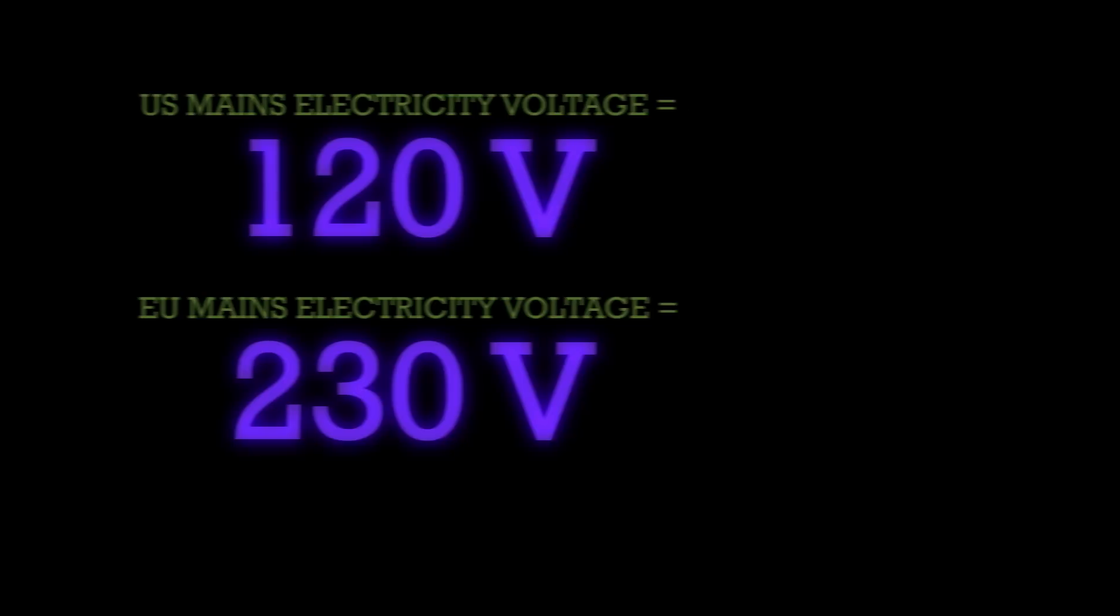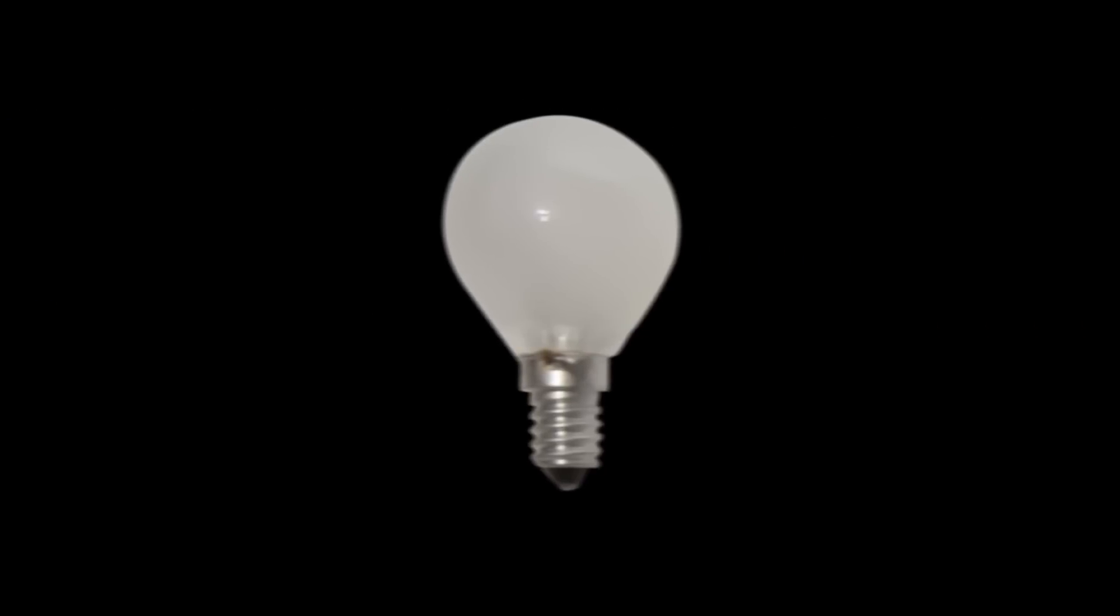Then let's look at wattage. An old-fashioned light bulb might use something like 40 watts. You can usually find the wattage printed somewhere on the item.